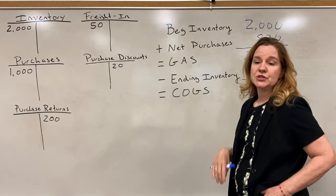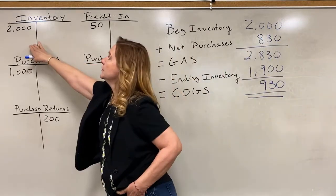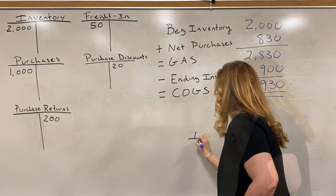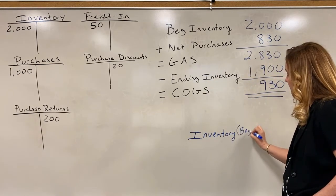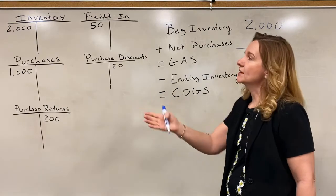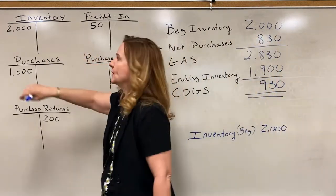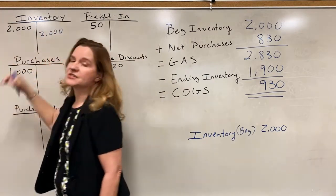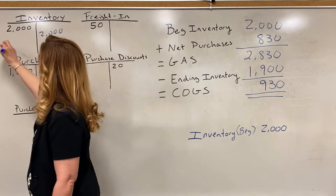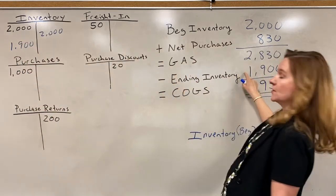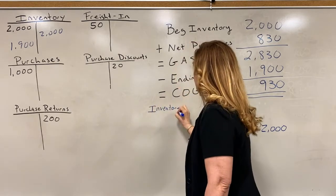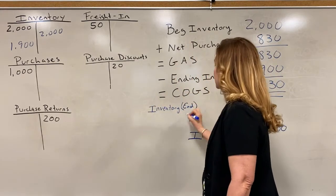Doing that journal entry, the first thing we're going to do is remove the beginning inventory by crediting that account. So I'll credit inventory (beginning) for $2,000. Then I'm going to update inventory for the ending balance of $1,900 — by reducing it I've zeroed that account out, and now I'm adding $1,900 back. So I'll debit inventory (ending) for $1,900 — that's the ending inventory I want it to reflect, even though it's truly the same account.